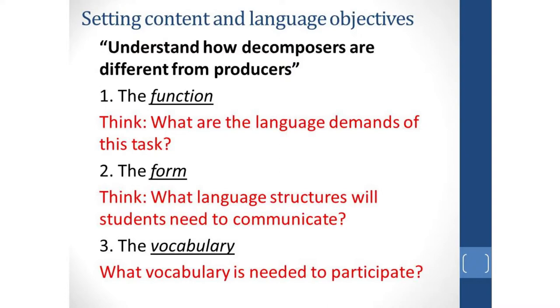Next, think what language structures are students going to need to communicate, comparing and contrasting a decomposer and a producer? How do we put words together to do that? And then there's the vocabulary of this particular science unit. So it might be decomposer, producer, organism, perhaps ecosystem.